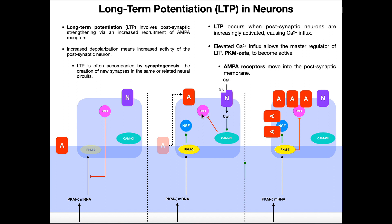We now have an inactivated PIN1. PIN1's normal action when activated was to inhibit the translation of PKM-zeta mRNA into protein. Now that calmodulin kinase 2 has inhibited PIN1, PIN1 is no longer able to inhibit this translation process. So with a lot of calcium in the cytoplasm and calmodulin kinase 2 activity, PKM-zeta mRNA is now able to be translated into its protein, PKM-zeta.